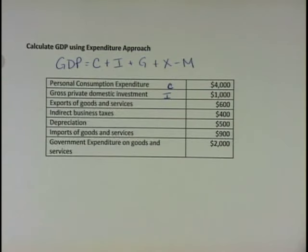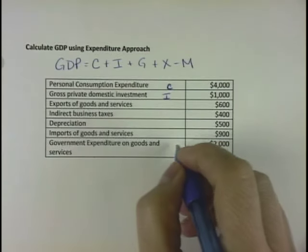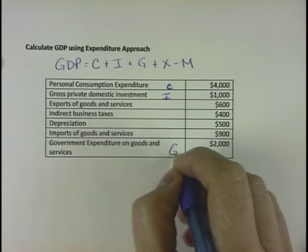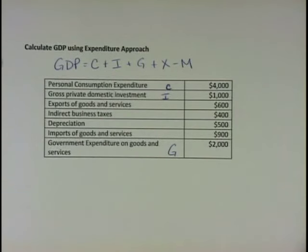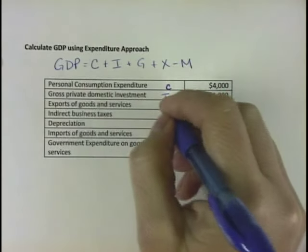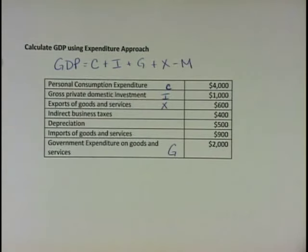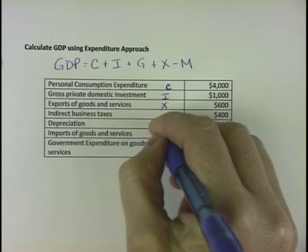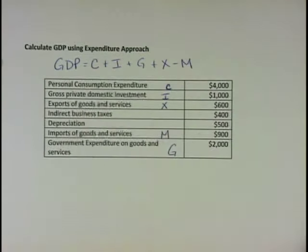The G is government expenditures on goods and services — that's our G component. X, and I know it doesn't start with X, stands for exports. Exports is the X factor. And then M is our imports.